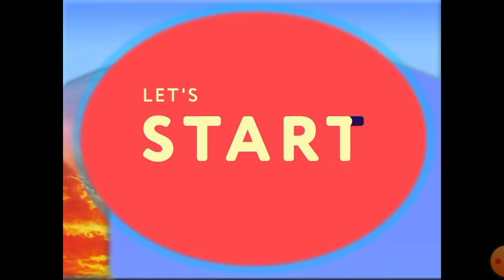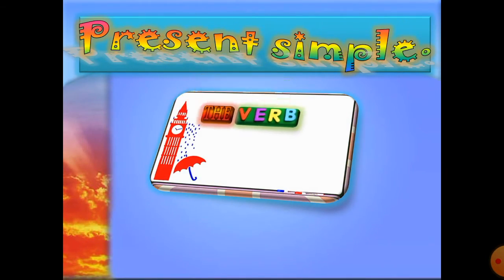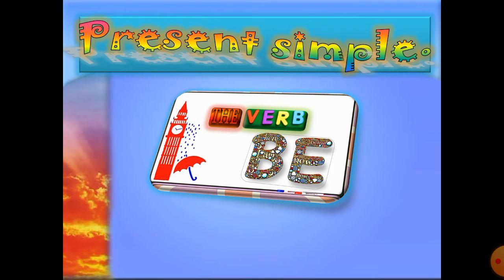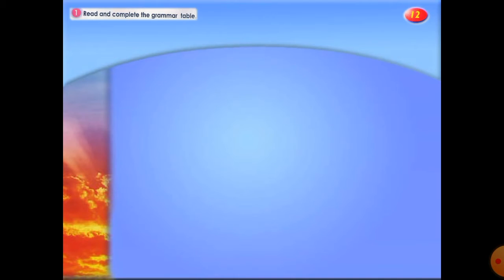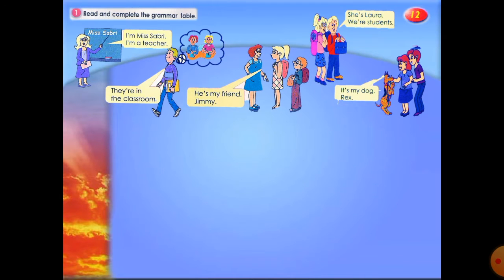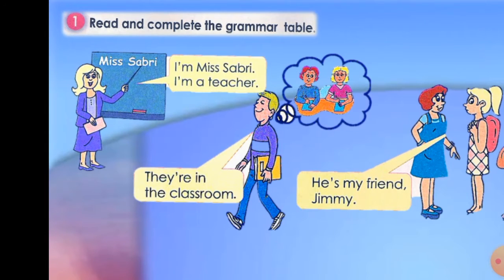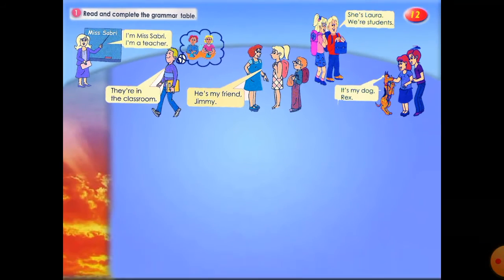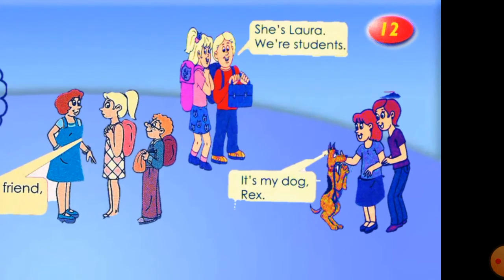Let's get started. So we have just two things today to focus on. The present simple, the verb 'be' — to be or not to be, that's the question, as Shakespeare said. On page 12 we have this assignment: read and complete the grammar table. We have statements: 'I am Miss Sabri, I'm a teacher,' 'They're in the classroom,' 'He's my friend Jimmy,' 'She's Laura,' 'We're students,' 'It's my dog Rex.'